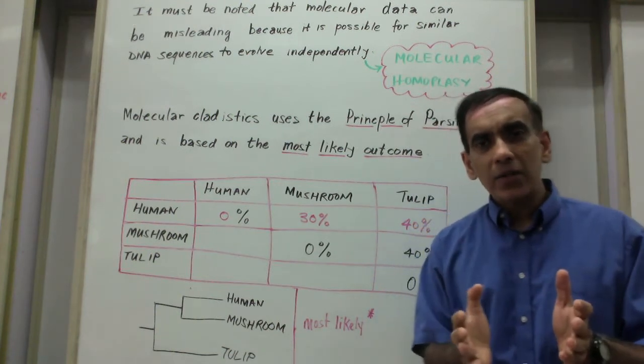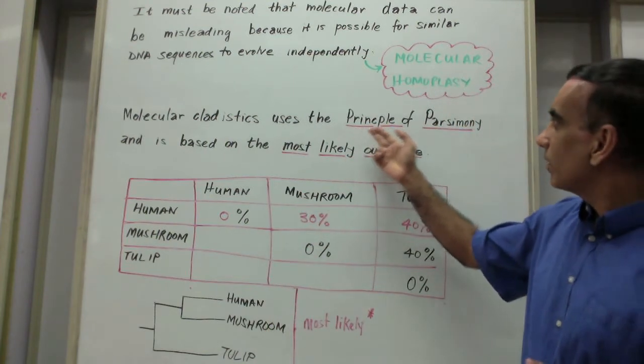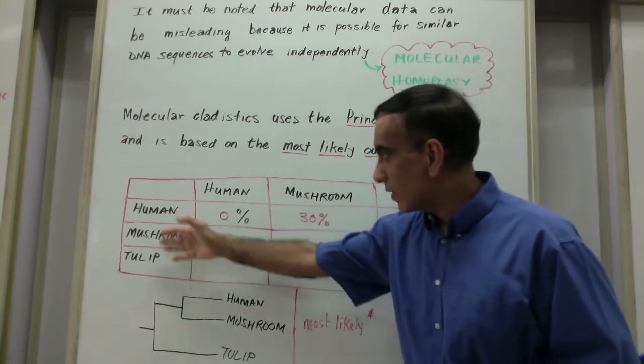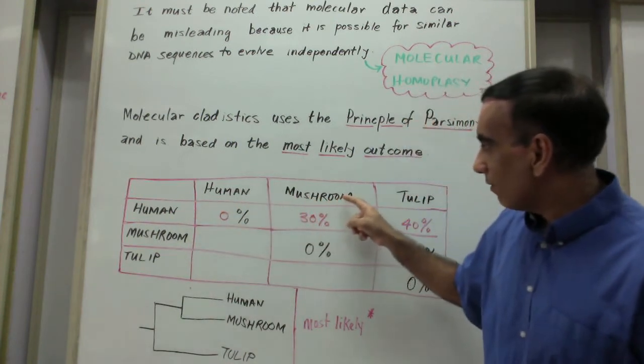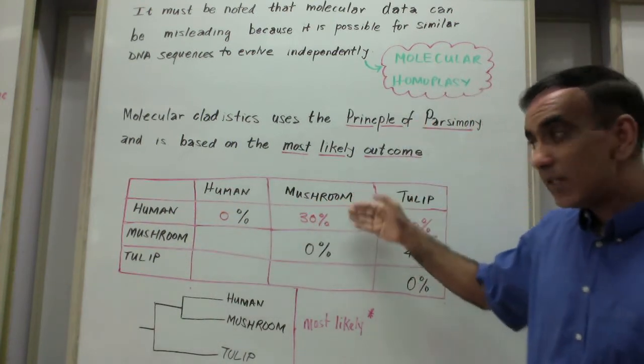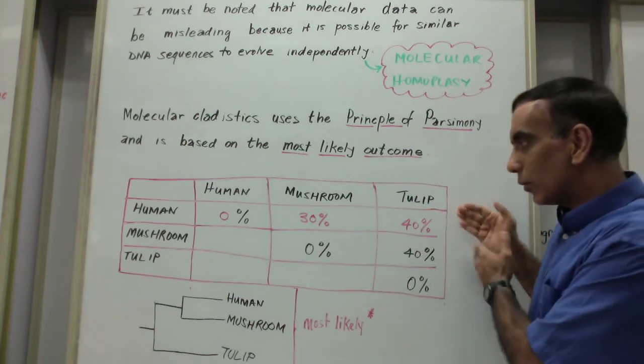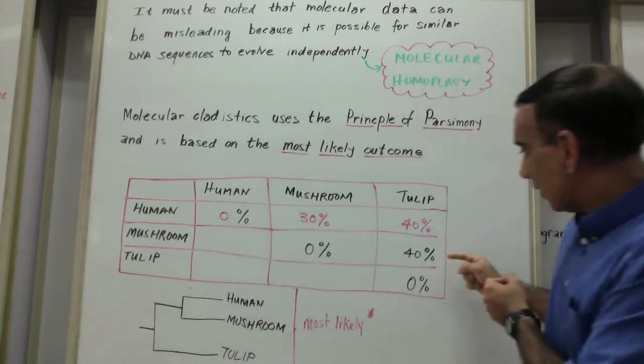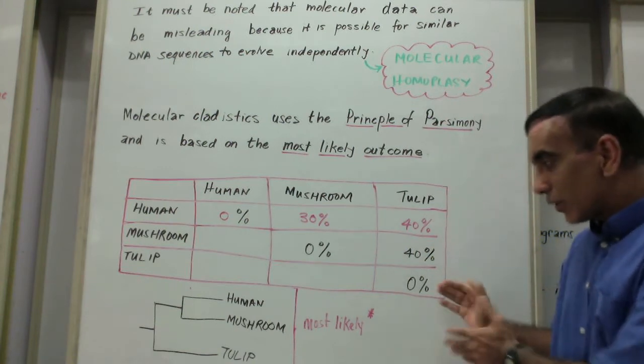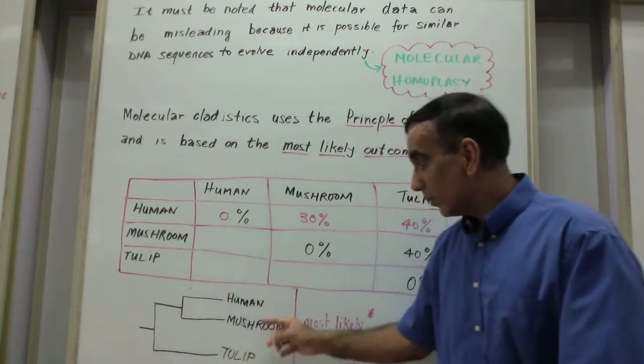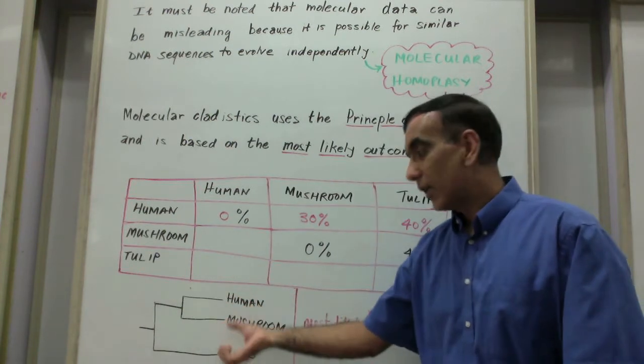Molecular cladistics is based on the most likely outcome or a principle of parsimony. Take for example this table here, which shows a human having a 30% difference in its base sequence compared to a mushroom and a 40% difference compared to a tulip, and the mushroom and the tulip also having a 40% difference. This data would most likely produce a cladogram like this, placing the human and the mushroom on a branch closer to each other and the tulip on a separate branch.